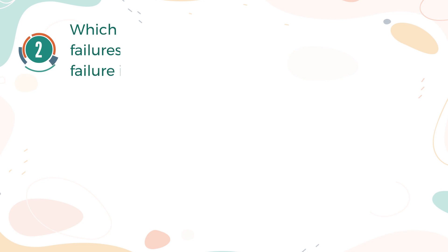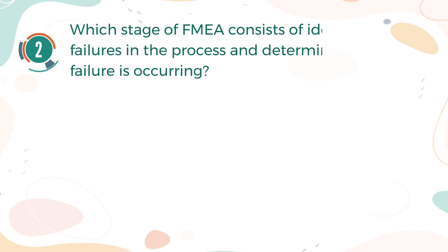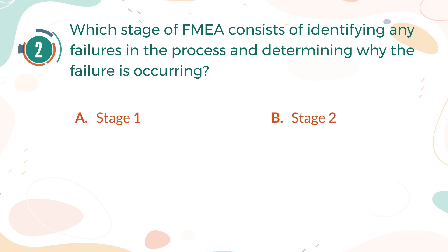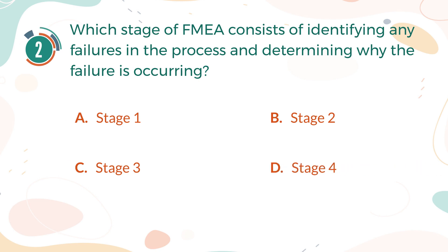Number 2. Which stage of FMEA consists of identifying any failures in the process and determining why the failure is occurring? A. Stage 1. B. Stage 2. C. Stage 3. D. Stage 4.